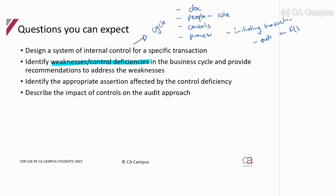You may also be asked to identify the assertion affected by a control deficiency — if a control isn't working, it's not addressing a specific risk, which means a particular assertion could be wrong. You might also need to describe the impact of controls on the audit approach: from your understanding, do you think the controls are effectively addressing the risk? If yes, you'd want to test them; if no, you wouldn't test them and would follow a different audit approach. All of that will be covered in the coming weeks.